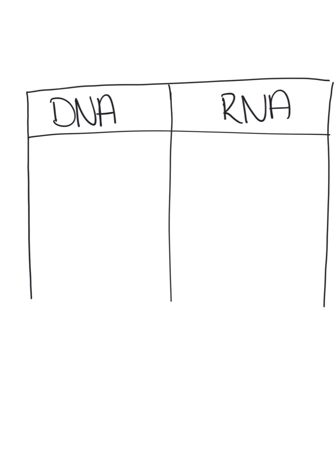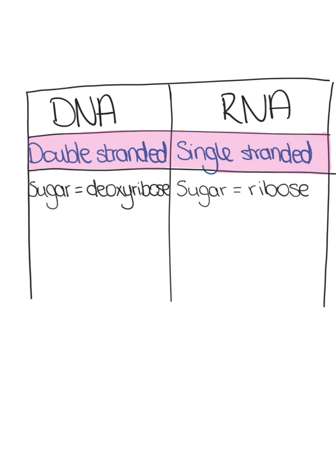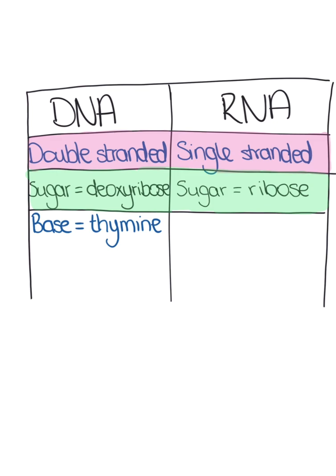Below is a summary table with the differences between DNA and RNA. DNA is double-stranded whereas RNA is single-stranded. DNA is made up of the sugar deoxyribose, whereas RNA is made up of the sugar ribose. Both DNA and RNA contain four bases. The difference is that DNA contains thymine, whereas RNA contains the base uracil.